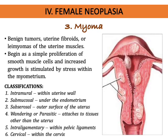Myoma is a benign uterine tumor — a uterine fibroid or leiomyoma of the uterine muscles. It originates from the myometrium, beginning as a simple proliferation of smooth muscle cells, with increased growth stimulated by stress within the myometrium. Classifications include intramural (within the uterine wall), submucosal (under the endometrium), subserosal (on the outer surface of the uterus), and wandering or parasitic myoma (attached to tissues other than the uterus).